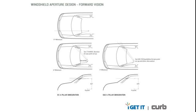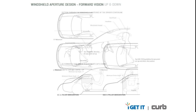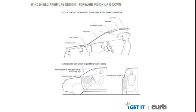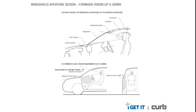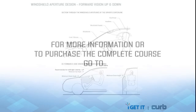Setting up the windshield aperture needs to be done with consideration for the legal vision requirements for most markets. The A-pillar obscuration criteria is shown here. The up and downward vision requirements need to be considered also. Vision lines are created tangent to the eye ellipse or through the V1 and V2 points and used to develop the cowl and windshield header sections. Note how important the driver's eye ellipse location becomes when the windshield perimeter is being set up.